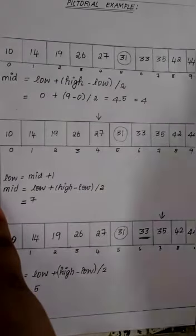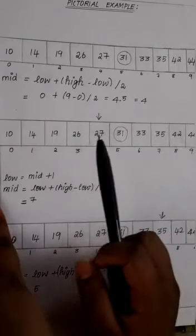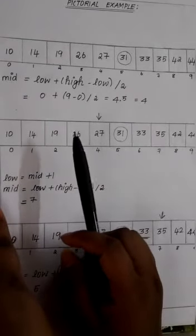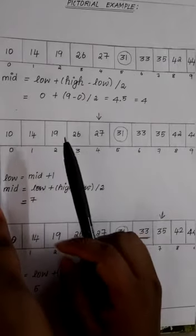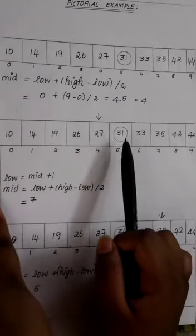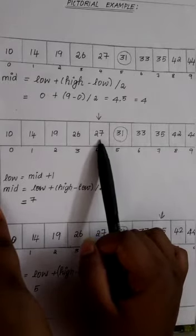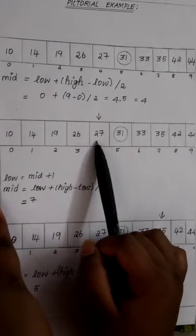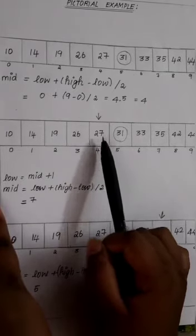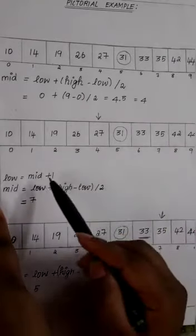When we compare the value stored at location 4 with the value being searched, that is 31, we find that the value of location 4 is 27, which is not a match. As the value is greater than 27 and we have a sorted array, we also know that the target value must be in the upper portion of the array. So now we change our low to mid plus 1 and find the new mid value again.